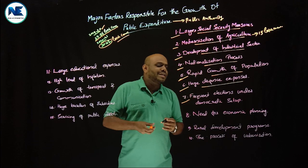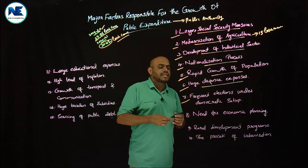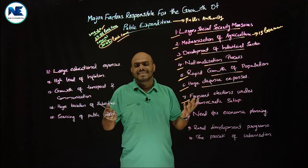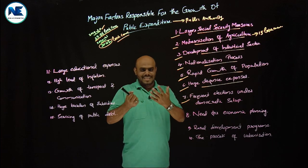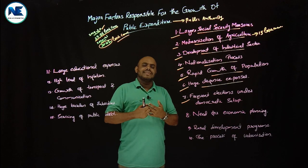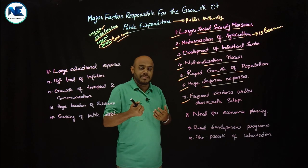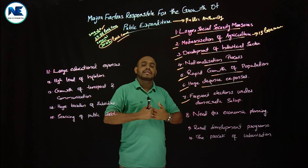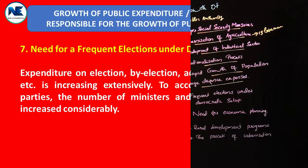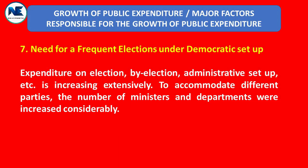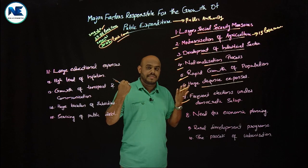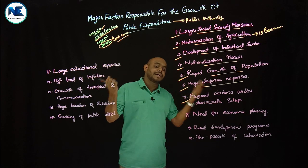The seventh point is frequent elections under a democratic setup. In a democracy — with Panchayati Raj, state legislative assemblies, and Parliament — elections are held frequently. We are spending a huge amount of money on conducting these elections. This is another factor responsible for the growth of public expenditure.